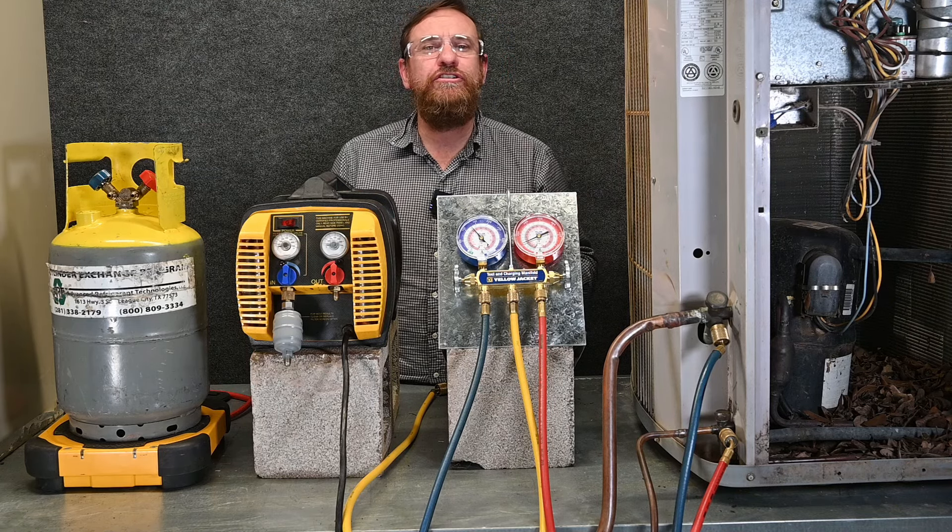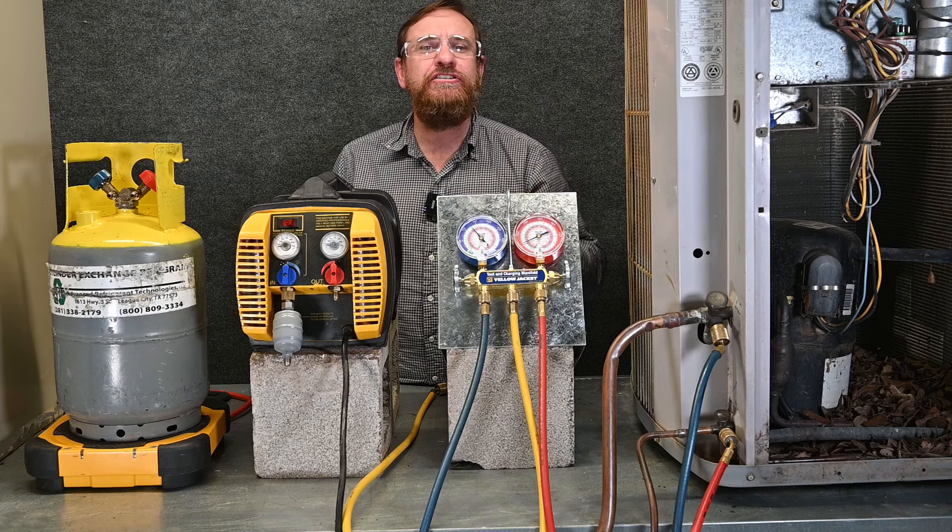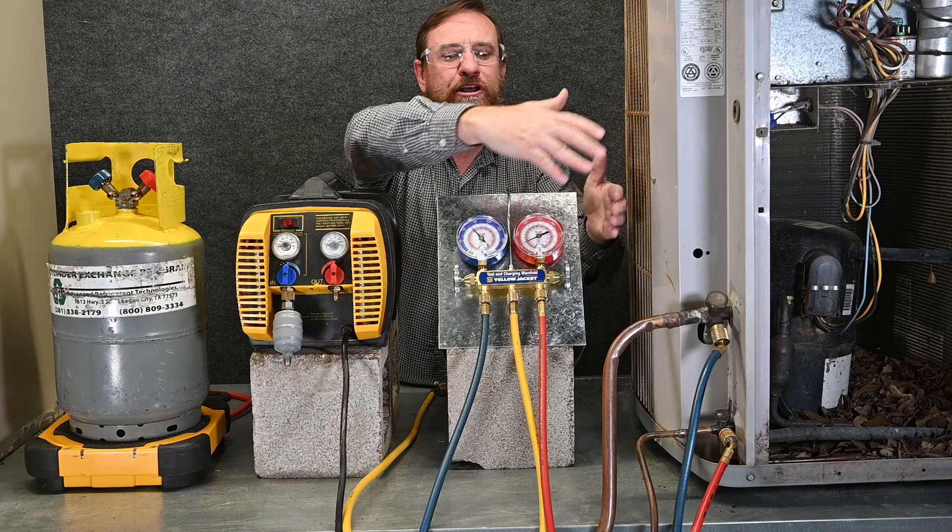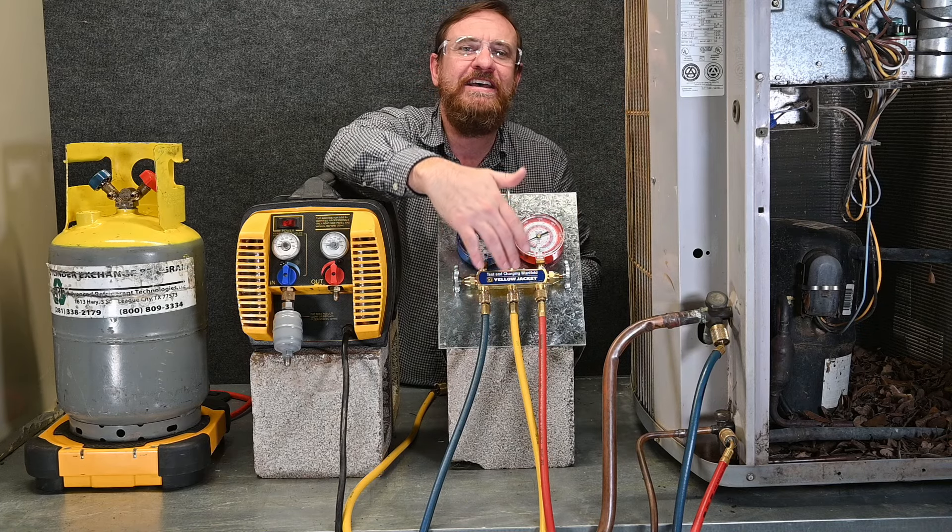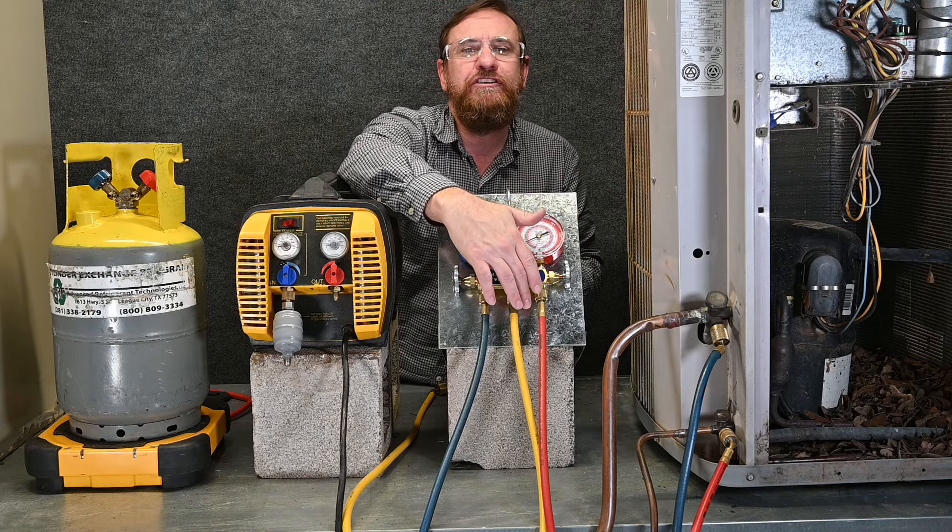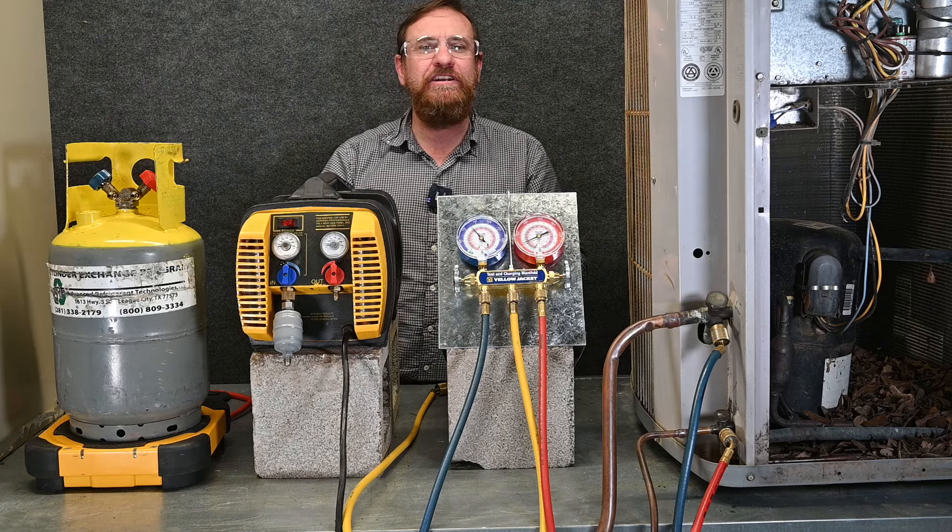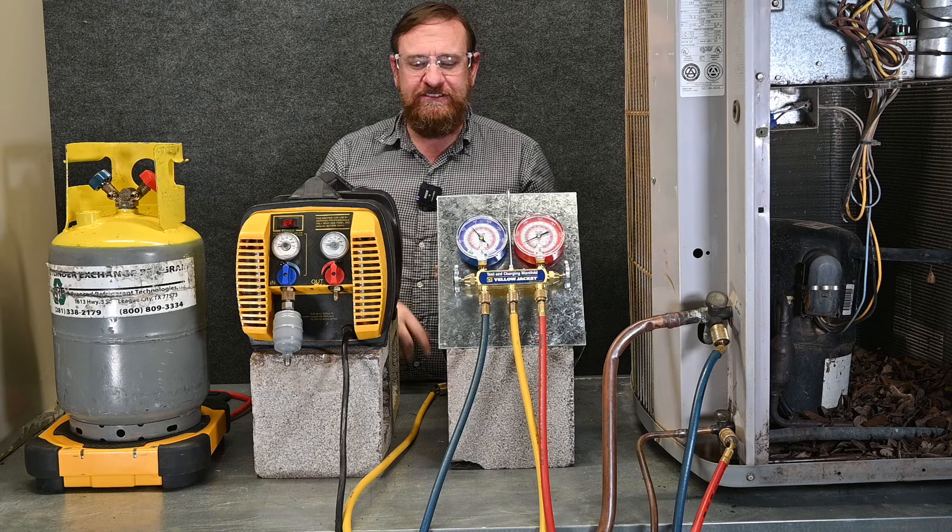For this example we have R22 in the system and our gauges are already hooked up and pre-purged. So all we really need to do is pull refrigerant from the unit through the hoses to our manifold gauge set, from the center hose or service hose into the machine, pump it out of the machine into our recovery tank. So to do that, let's follow these steps.